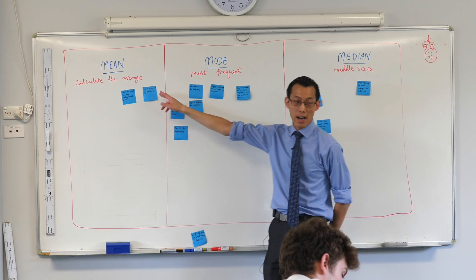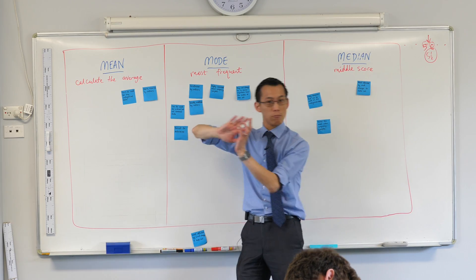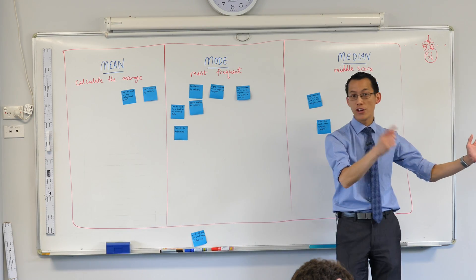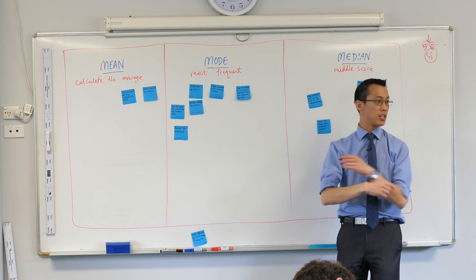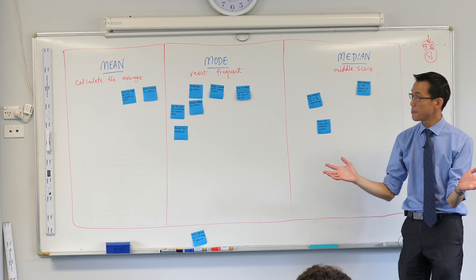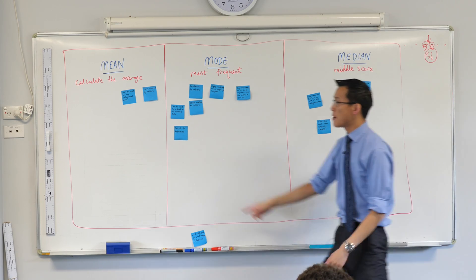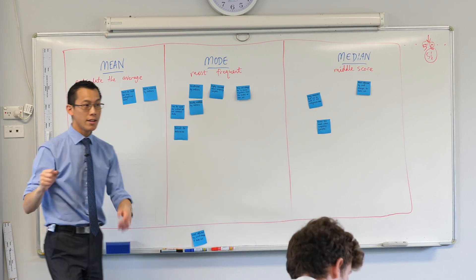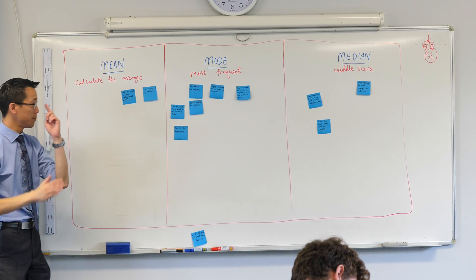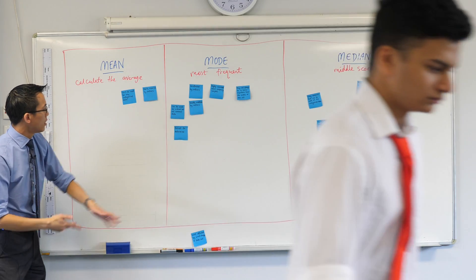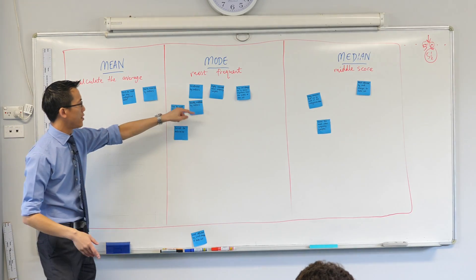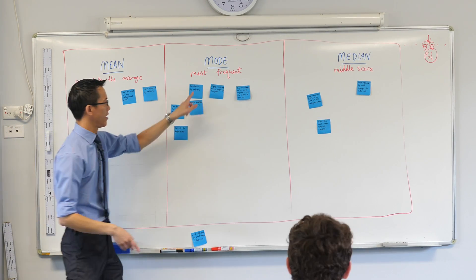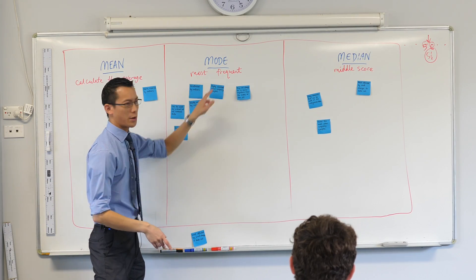Exactly — an outlier is something way down low or way up high, and you only need one of them to completely throw out the mean. So I'm happy to have both of those written down in your mean column. Let's go over to the mode. The mode was, ironically, most frequently used.